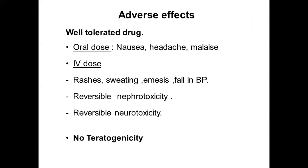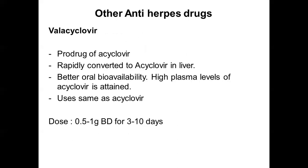Regarding adverse effects — as already mentioned, it is a very well-tolerated drug. Orally it can cause nausea, headache, and malaise. With IV dose, very rarely it can cause rashes, sweating, emesis, fall in BP, and reversible nephrotoxicity and reversible neurotoxicity. These occur mainly in individuals who already have kidney disease or a neurological disorder. It is not teratogenic — that is, it is safe to give in pregnancy. That is about acyclovir, the principal anti-herpes drug.